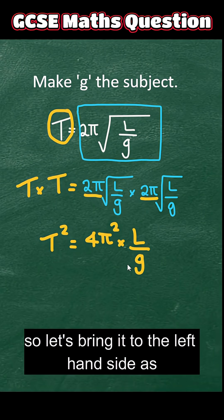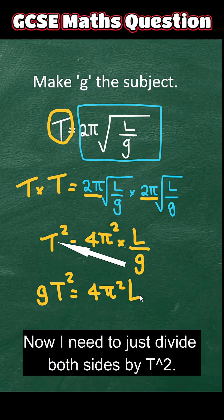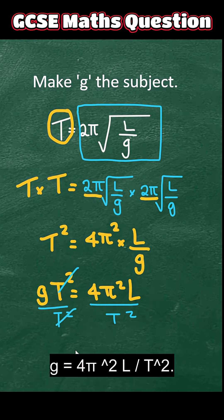So let's bring it to the left-hand side as multiplication. Now I need to just divide both sides by t squared. These two get cancelled out. g equals 4π squared L divided by t squared.